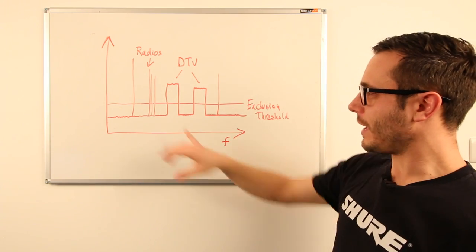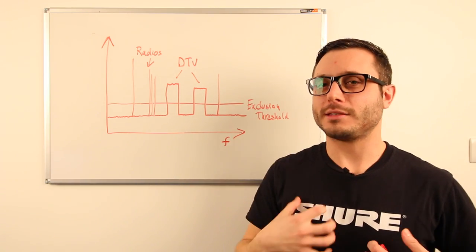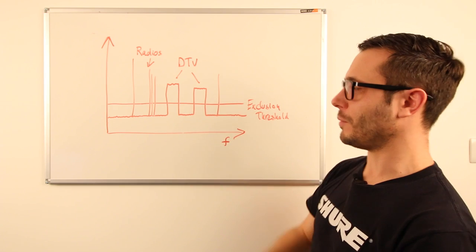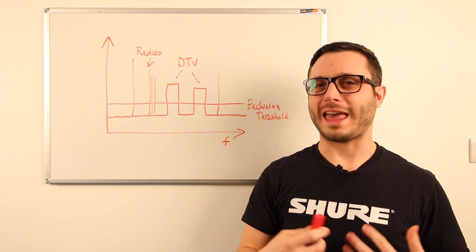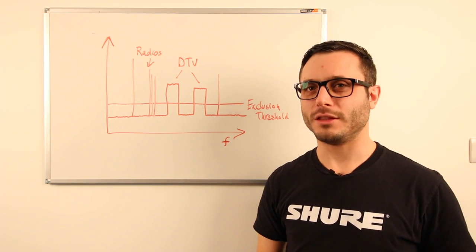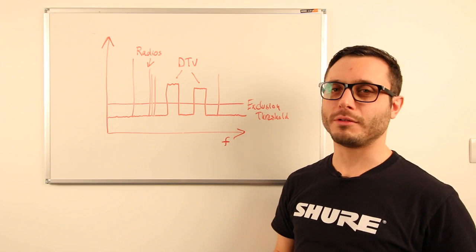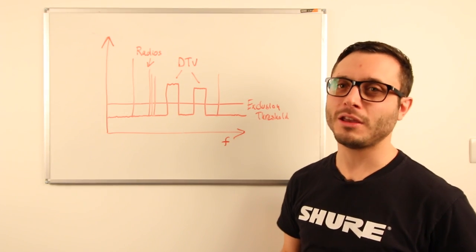So this is an example of where you might find some white space. Now us as humans can just look at a graph and know where the white space is, but we can't ever just know where it actually is in the real world. We're going to need our receiver to do some form of scan for us.